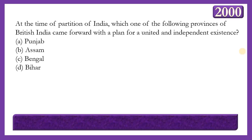Next question: At the time of partition of India, which province of British India came forward with a plan for a united and independent existence? Options: Punjab, Assam, Bengal, or Bihar. The correct answer is option A — Punjab. During the partition, Punjab province came forward with a plan for united and independent existence. It was due to the efforts of Sardar Vallabhbhai Patel that PEPSU came into existence, consisting of Eastern Punjab, Patiala and Haley States.